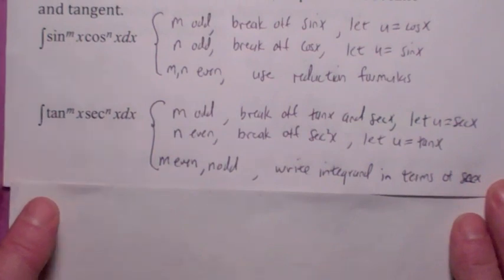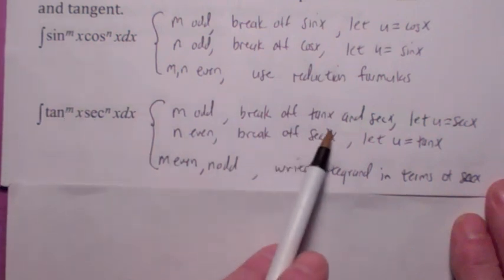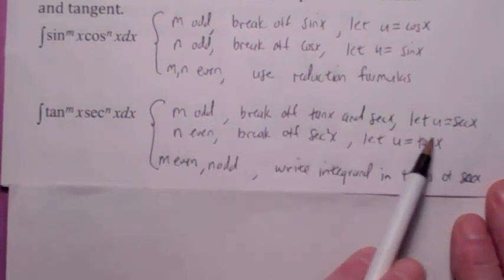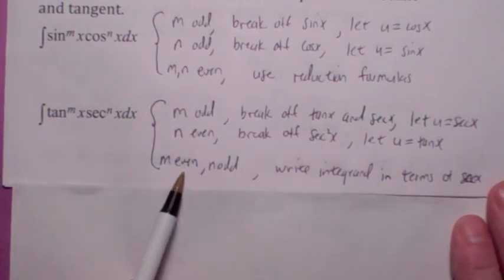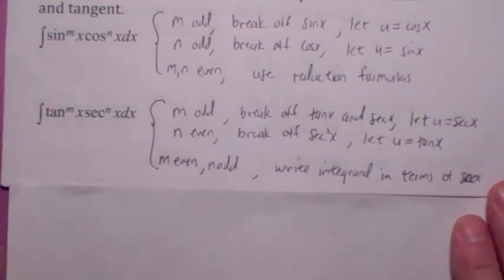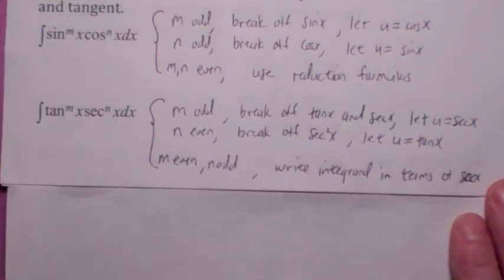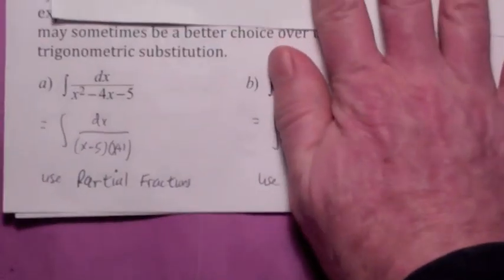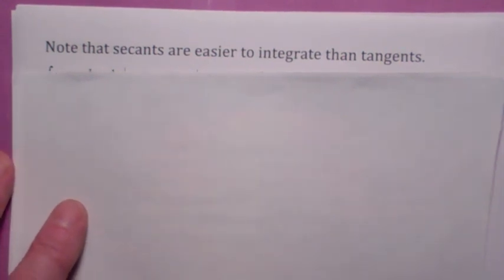The other one we looked at a lot was this one, powers of tangent and secant. Remember, if the power of tangent is odd, you break off a tangent and a secant. That's going to be your du, so you let u equal secant. Power of secant is even, you break off a secant squared, let u equal tangent, and this thing will be your du. So the question was, well, what happens if the power of tangent is even, the power of secant is odd? Well, it's usually kind of a mess. That's kind of the hardest case. And the general strategy is to write everything in terms of secant. So the question is, why would you do that? Why would you write everything in terms of secant? Why wouldn't you just write it in terms of tangent? And the answer is, sorry tangent,